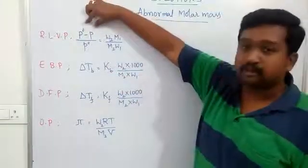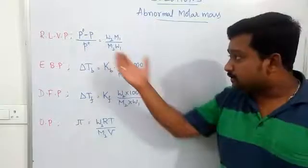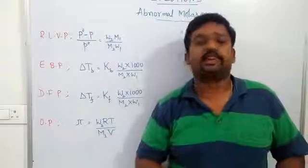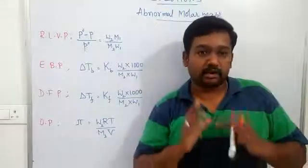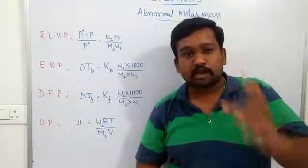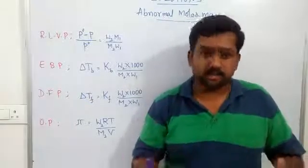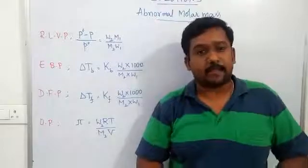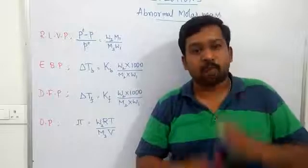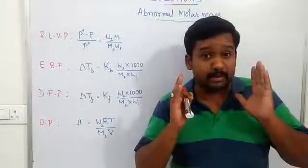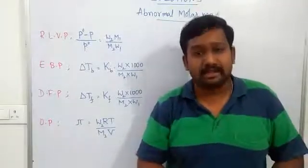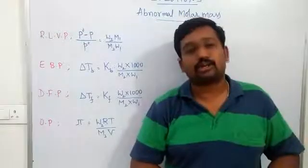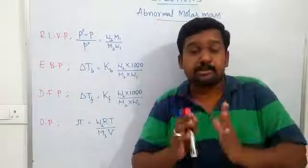If we know the value of a colligative property, we can easily determine the molar mass using these expressions. However, in certain cases there are difficulties: some solutes, when dissolved in a particular solvent, may undergo association or dissociation. So there are chances of molecular association and molecular dissociation. This happens usually in the case of electrolytes, where molecules get dissociated, and in certain molecules, association is also possible — perhaps due to instability or intermolecular forces of attraction.